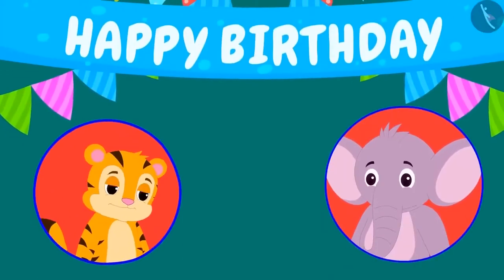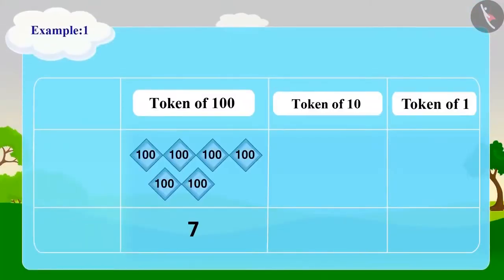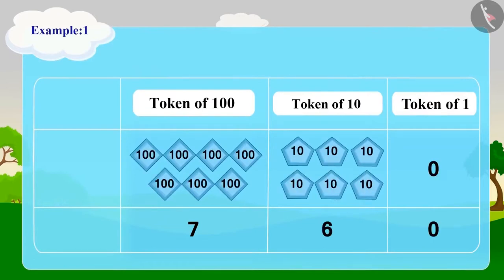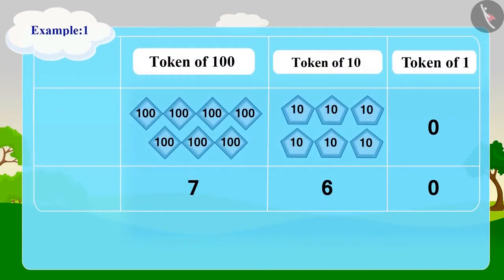Now, Appu is counting the marbles given by Sher Khan using tokens. He used 7 tokens of 100, 6 tokens of 10 and 0 tokens of 1. Can you write the number of marbles given by Sher Khan with these tokens? Let us understand the process. We can write 7 tokens of 100 for the number 700, then 6 tokens of 10 for 60 and finally there are no tokens for 1. So we will write 0 in the token of 1. Now, we can easily identify three-digit numbers in this expanded form. Oh wow! Sher Khan gifted Appu 760 marbles.